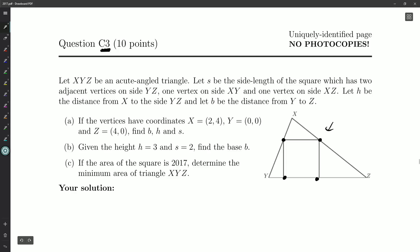Let h be the distance from X to the side YZ. So drop a perpendicular down here. Shortest distance to a line always makes a right angle to that line.